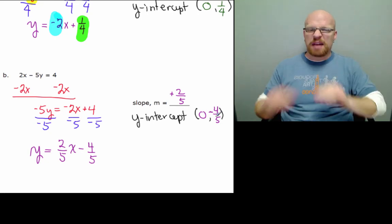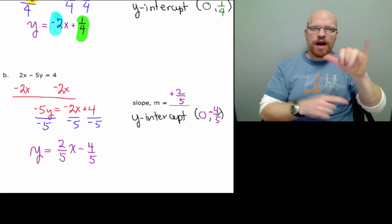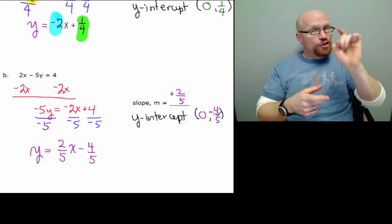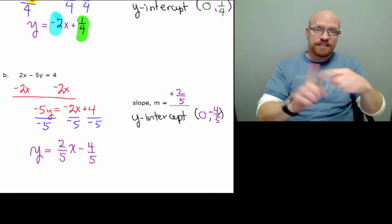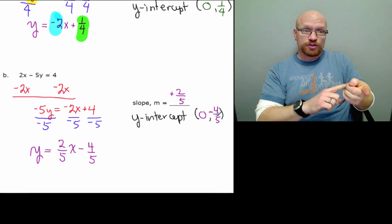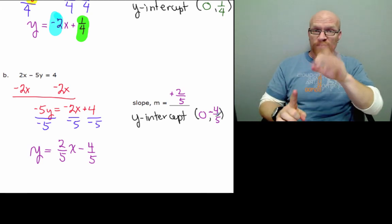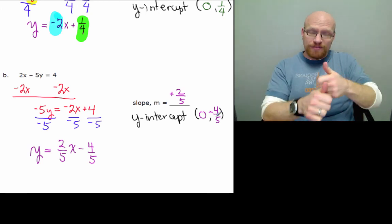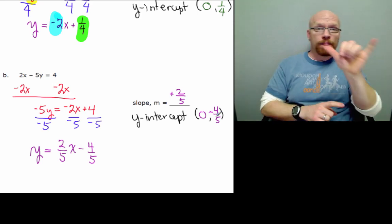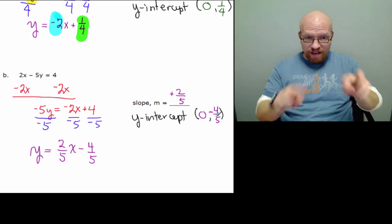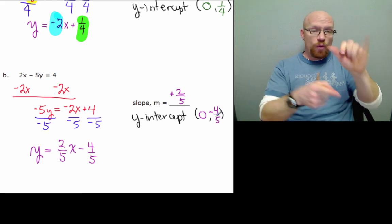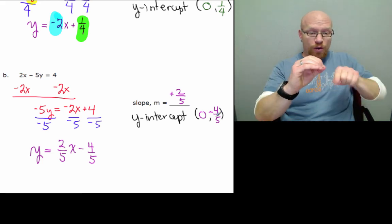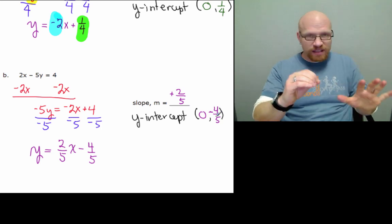Now you can see I went ahead and put them in the slope and the y-intercept. You have to remember to keep the appropriate positive or negative with those numbers. 2x was a positive coefficient, so the slope itself is positive. The y-intercept, the y-value, it was minus 4 fifths. Therefore, the y-intercept is 0, negative 4 fifths. Thank you.